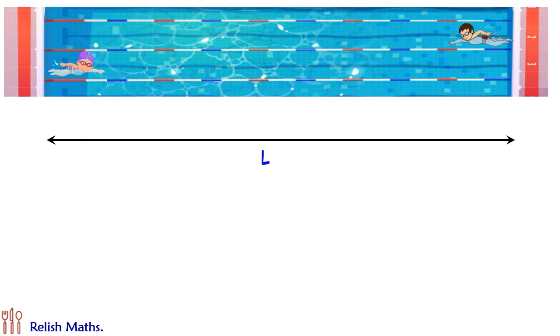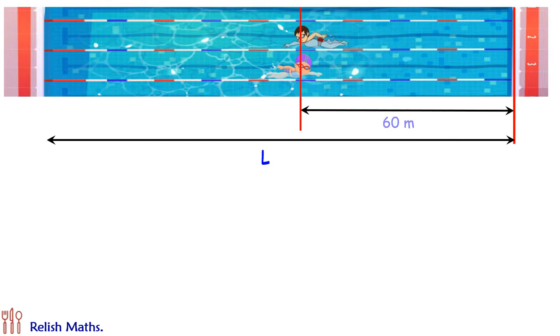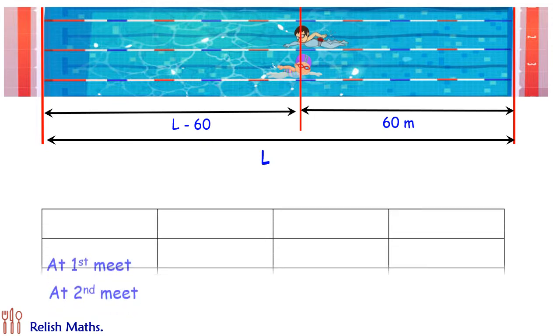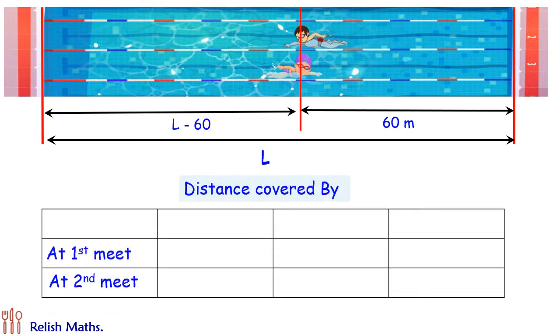Let's see our solution. So when A and B are meeting for the first time at a distance of 60 meters from the right side, the distance from the left side that will be L minus 60. Now let's put this in tabular form.